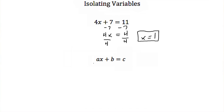Say we were given an expression without any numbers, just with variables, and it was ax plus b is equal to c. Notice this second expression is just like the first expression that we solved for, except all of our numbers are just variables.